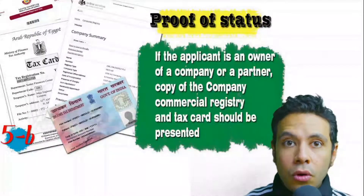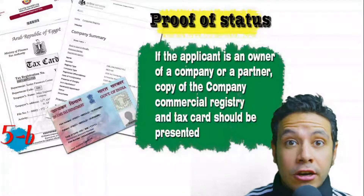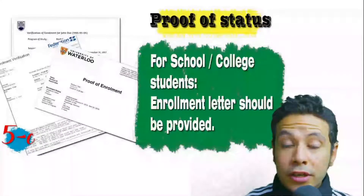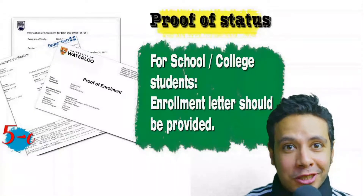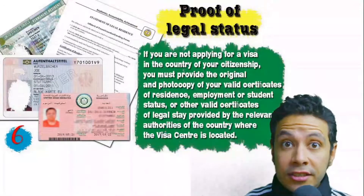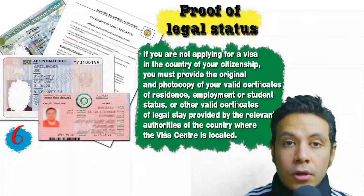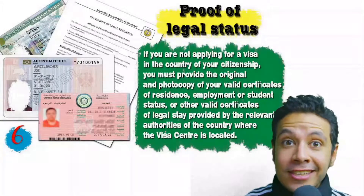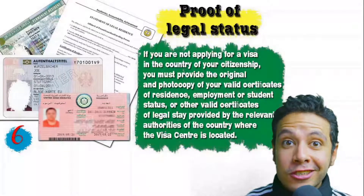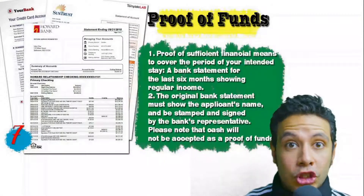If you are the owner of a company or run your own business, your commercial registry and tax card must be presented. If you are a student, an enrollment letter from your university or school should be provided. In some cases, if you are applying from a country different from your own, you will need to provide proof of legal residence in that country, and in some cases a valid residence visa for that country can also be accepted.